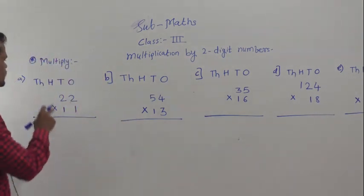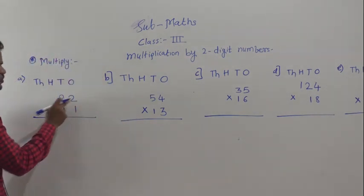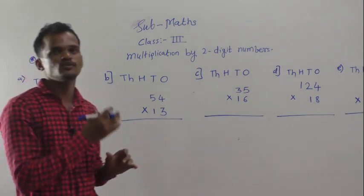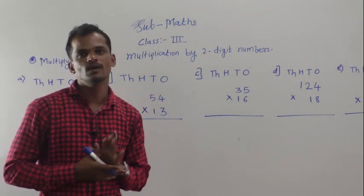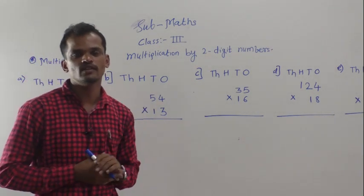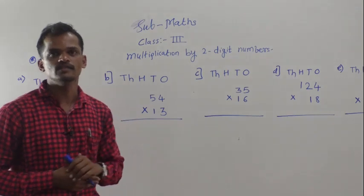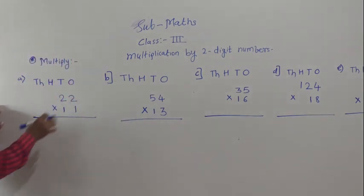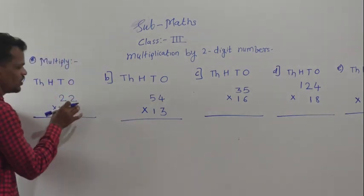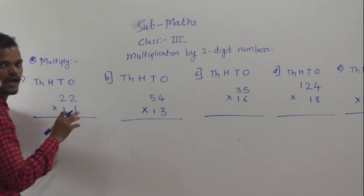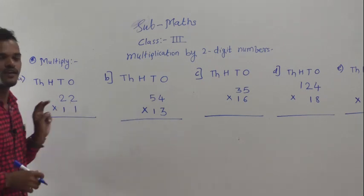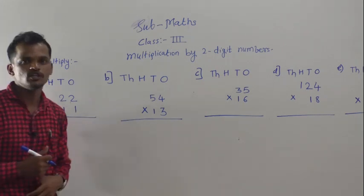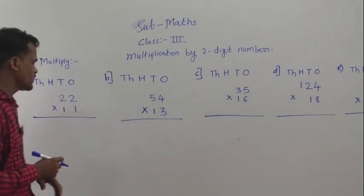22 multiply by 11. We will use the long multiplication method to solve this example. If you know the table of 11, you can solve directly, but I am showing the long multiplication method.